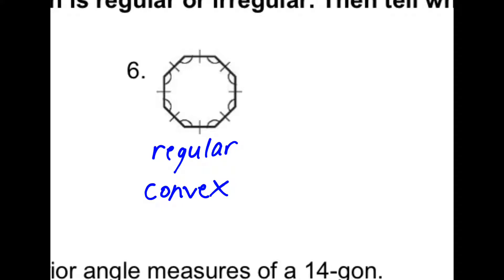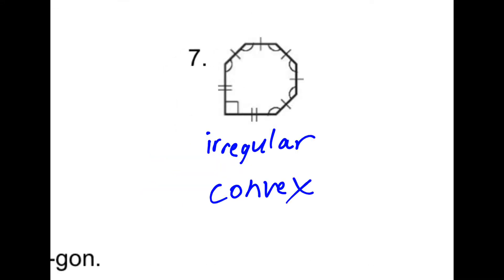Number six is both regular and convex, and seven is irregular and convex.